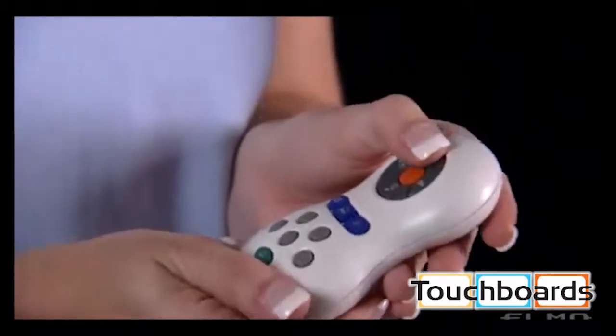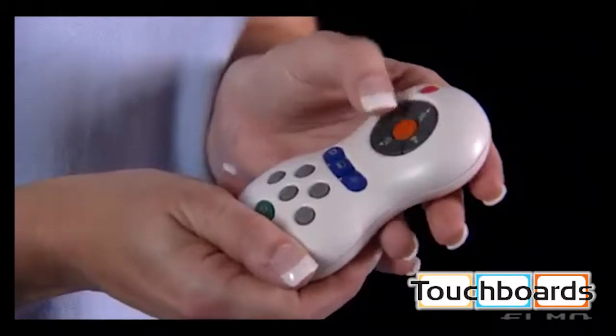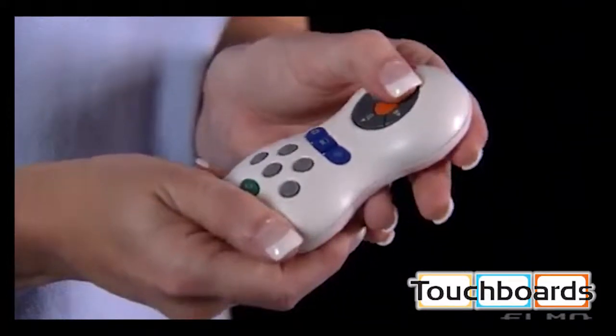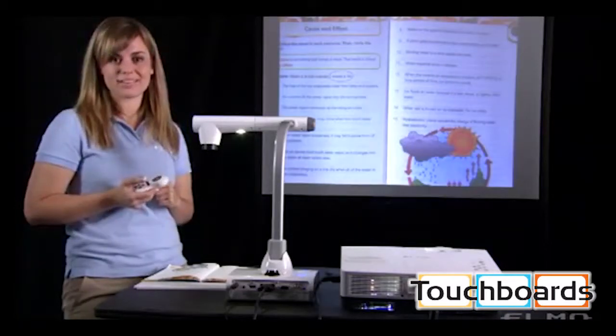I can move this highlight box around by using the gray buttons at the top of the remote, and when I'm finished, I'll just press that same highlight button again to remove the highlight box.